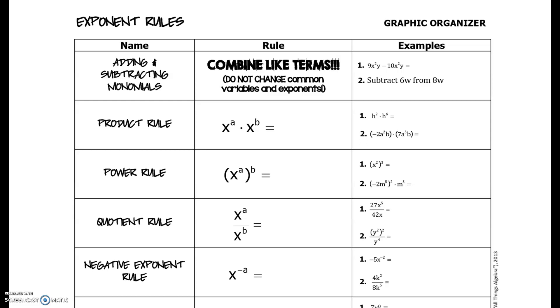So the very first part here where it says adding and subtracting monomials, the rule here states that the only thing we're allowed to do is this key phrase: combine like terms. And when we do that, we are not changing any variables or exponents. The variables and exponents are going to stay the same.